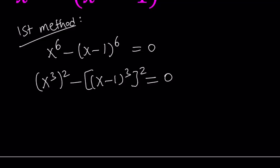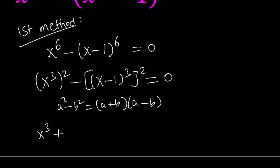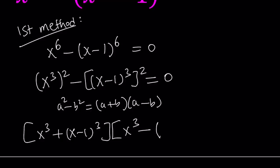Now, using difference of two squares — remember the formula: a squared minus b squared can be written as a plus b multiplied by a minus b. So that's the formula we're going to use: x cubed plus x minus 1 cubed is going to be one of the factors, and the other factor is x cubed minus x minus 1 quantity cubed. So this gives us two factors.